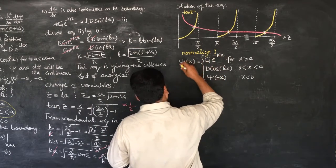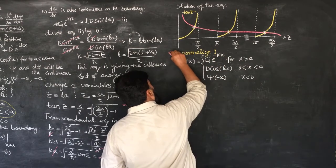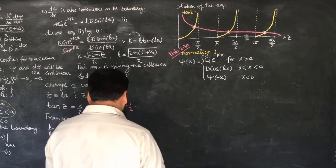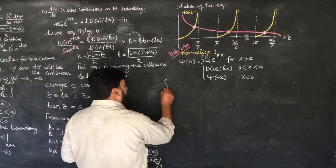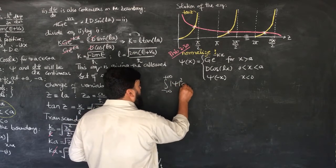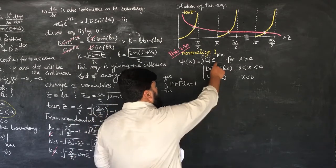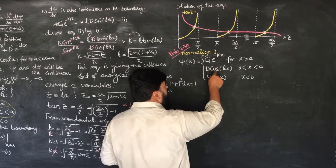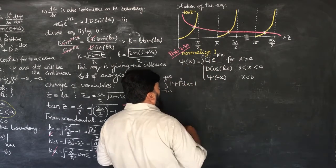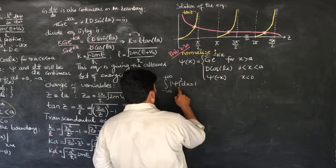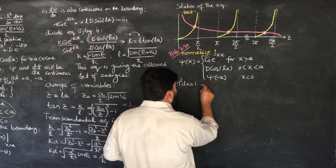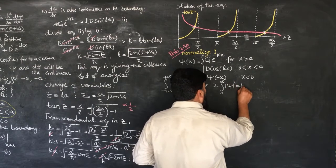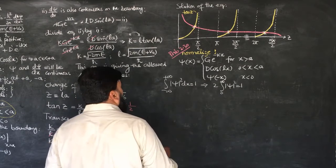This is Problem 2.30, which asks us to normalize these wave functions. The normalization condition is the integral from minus infinity to plus infinity of |ψ|² dx = 1. Since both wave functions are even — replacing x by −x gives no minus sign — we can use symmetry and write 2 times the integral from 0 to infinity of |ψ|² dx = 1.